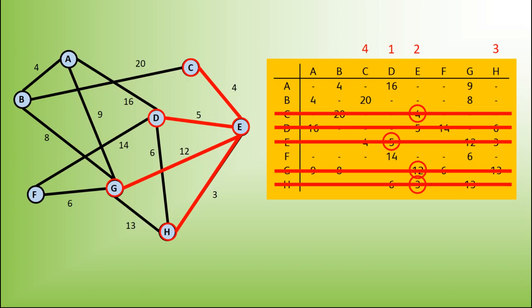Cross out its row, add a number above, and look down the columns. Smallest number now is the 6. This is involving the edge from F to G, which allows us to use vertex F.